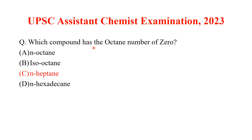Which compound has the octane number of 0? N-heptane has an octane number of 0, whereas isooctane has an octane number of 100. So, the answer to this question is option C.